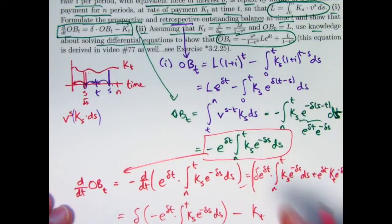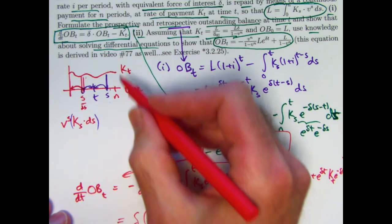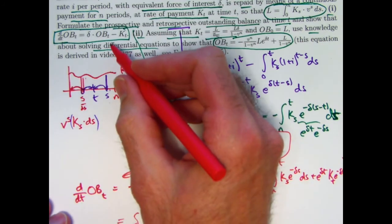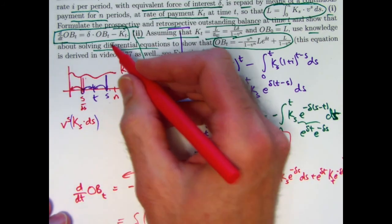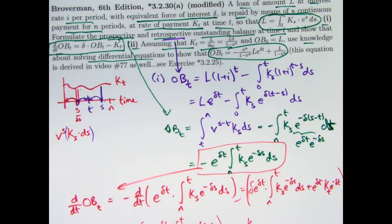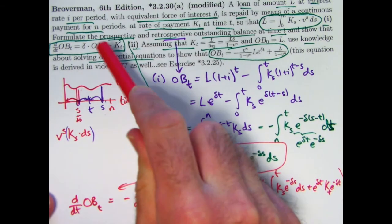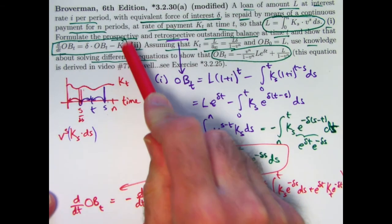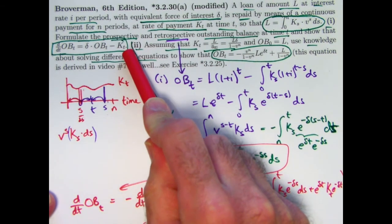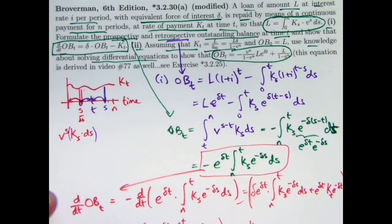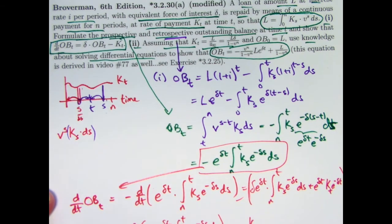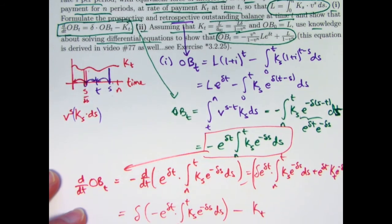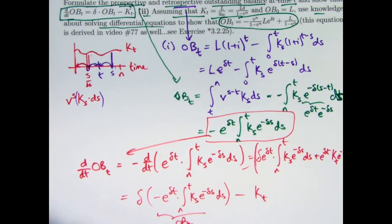So I've verified that the prospective formula satisfies the differential equation d(OB)/dt equals delta times OB minus kt. That's part one. Again, you should be able to make sense of and even derive this differential equation without going through all this algebra.